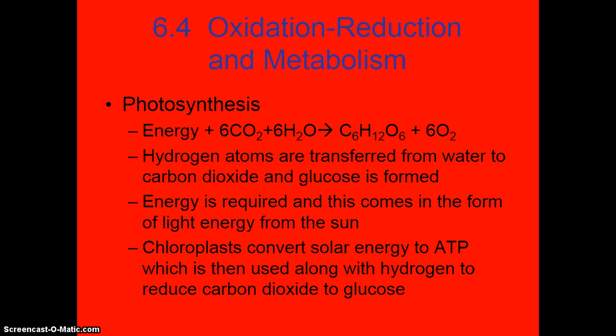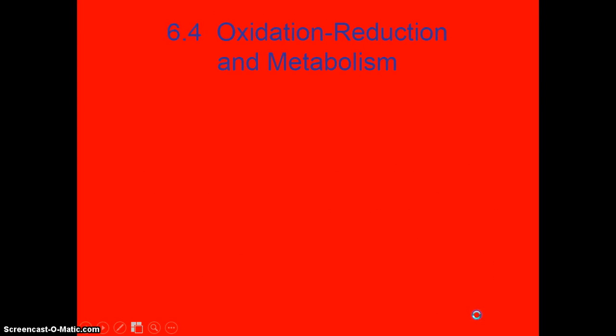Chloroplasts are what convert the solar energy to ATP, which is adenosine triphosphate, and it's used along with hydrogen to reduce carbon dioxide to glucose. So carbon dioxide is reduced, and glucose is our product.